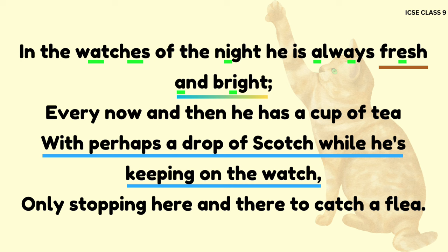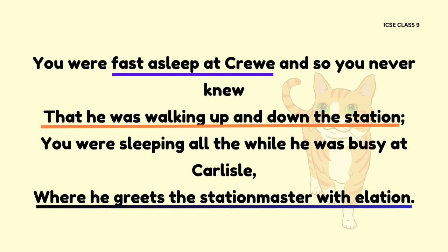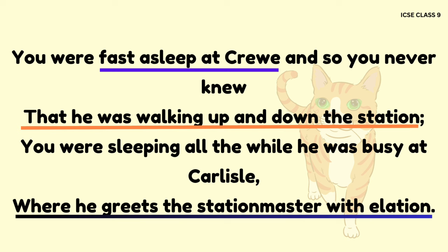In the watches of the night he is always fresh and bright. Every now and then he has a cup of tea with perhaps a drop of scotch while he is keeping on the watch, only stopping here and there to catch a flea. Line 50 is an example of assonance, since it shows repetition of vowel sounds within the lines of the poem, therefore creating internal rhyme. In the same line, the phrase 'fresh and bright' is an example of a metaphor, using metaphorical language to convey the cat's lively and friendly nature. Line 52, 'with perhaps a drop of scotch while he is keeping on the watch,' is also an example of assonance, showing repetition of vowel sounds.